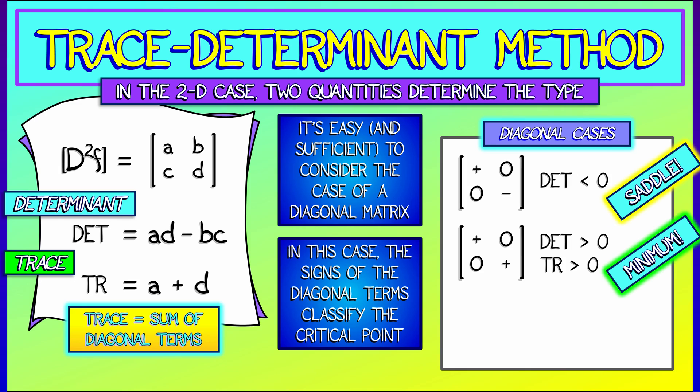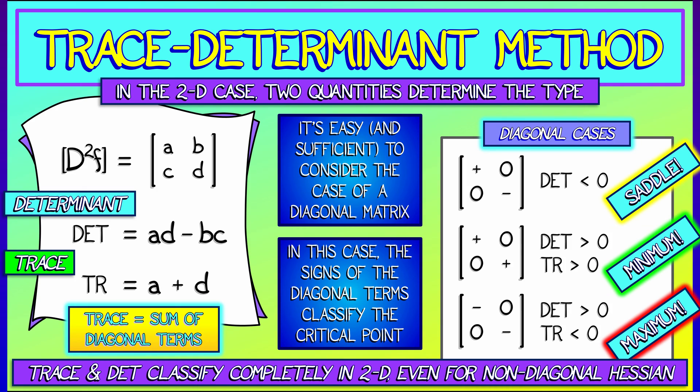Now, if I had a diagonal matrix with all negative terms, that would be a local maximum. Again, it would have a positive determinant, but it would have negative trace. This is why we need those two quantities, determinant and trace. I've argued this in the case of a diagonal matrix, but here's the thing: it works even in the non-diagonal case. The trace and the determinant completely classify critical points in 2D.